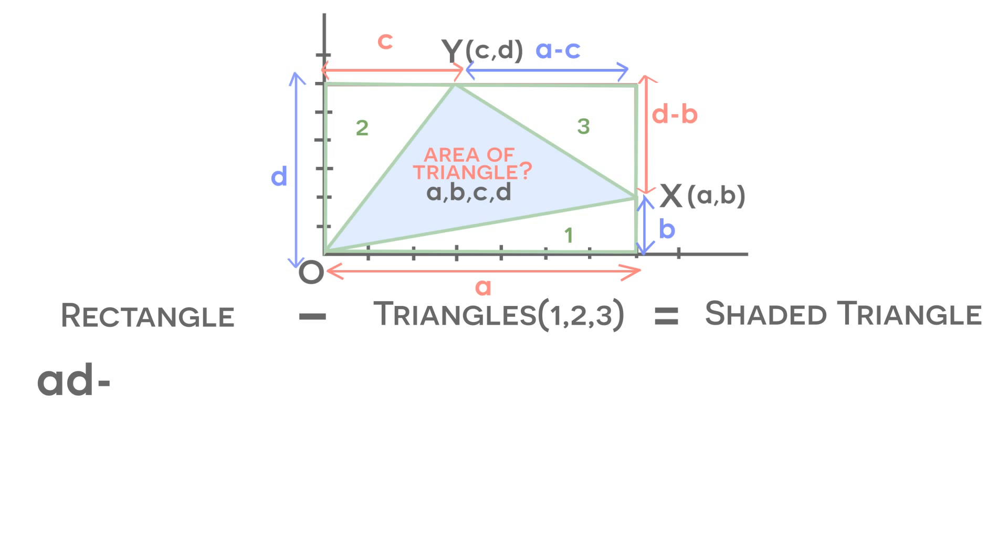We know the formula for the area of a triangle is one-half the base times the height. So the area of triangle number 1 is going to be one-half times A times B. The area of triangle number 2 is going to be one-half times C times D.